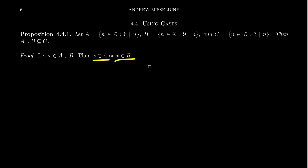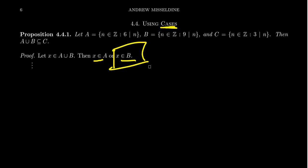At that moment, we kind of get stuck, because by nature of the 'or,' one of these things is true — they could both be true, but we don't know that. At least one of them is true. So how do we proceed forward? The idea is we can proceed forward using cases. One of those two things is true, so let's consider if the first one is true, and once we're done with that, we'll consider the second one. We break it up into cases: the case where X belongs to A, and the case where X belongs to B.